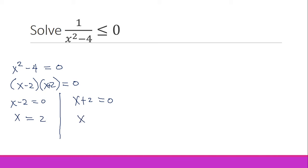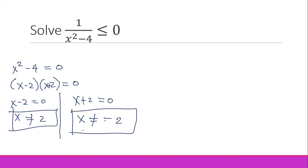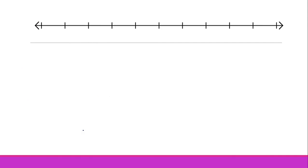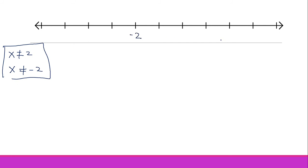Equating each factor to zero: x minus 2 equals zero gives x = 2, and x plus 2 equals zero gives x = negative 2. Since these come from the denominator, we use the 'not equal to' symbol — meaning x ≠ 2 and x ≠ −2. We now plot these on the number line with hollow circles, placing negative 2 and positive 2.